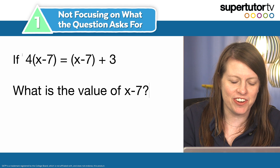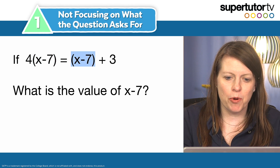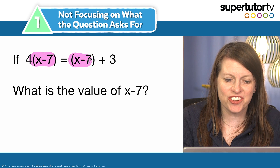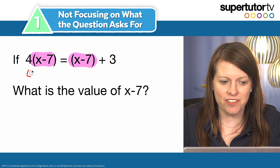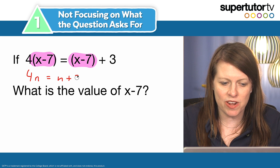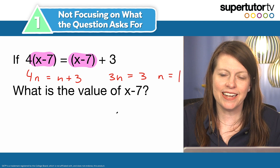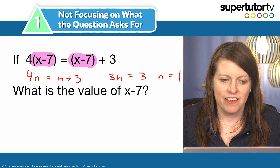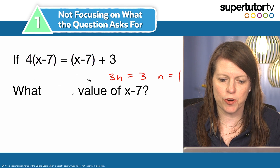Look at this equation — big ugly chunk, big ugly chunk — both of them are the same exact thing, they repeat, and that's actually what I want to solve for. So I get out my pencil, I write 4n equals n plus 3, so 3n equals 3, n equals 1 — done, 10 to 15 seconds. I look at these big ugly chunks, replace them with my own variable so I can quickly work the problem. I call that my big ugly chunk shortcut.